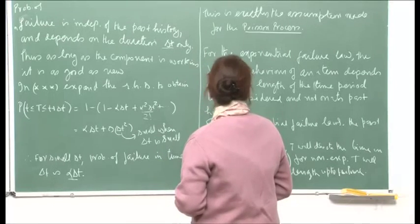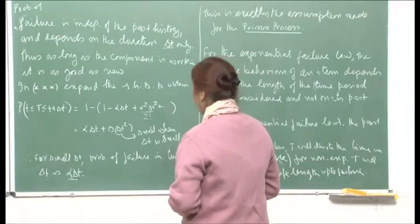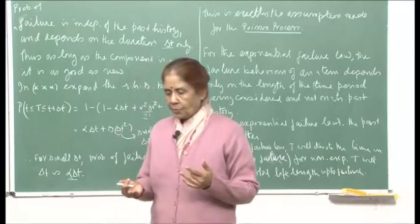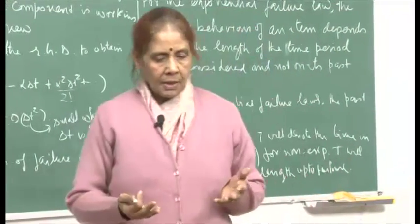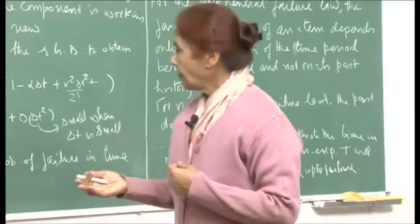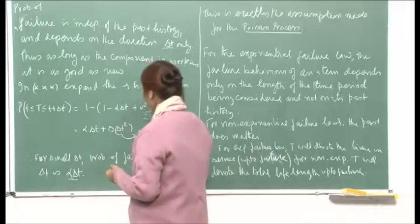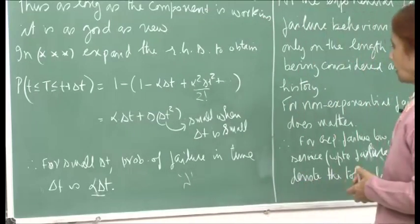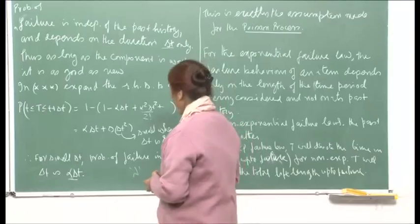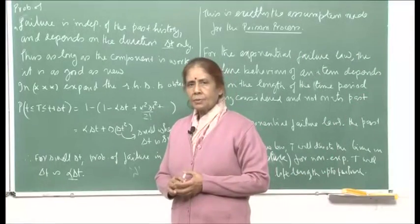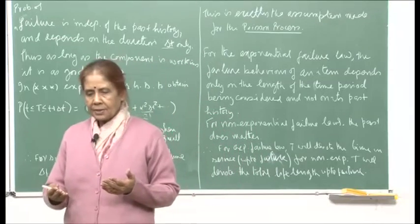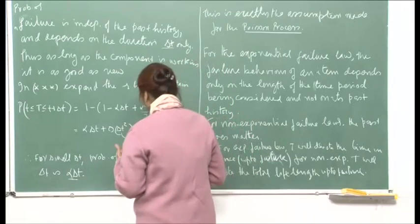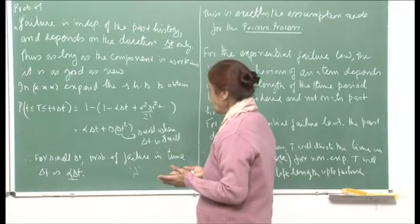Suppose you have an electronic device with many components, all following the same exponential failure law with identical distribution — the same parameter λ. And of course, the components behave independently. That condition for a Poisson process is also satisfied: arrivals are independent, and here the components will behave independently, so their failures will also be independent of each other.